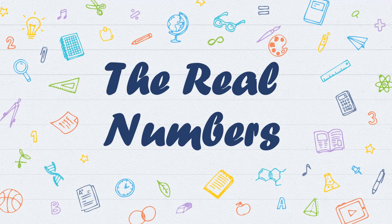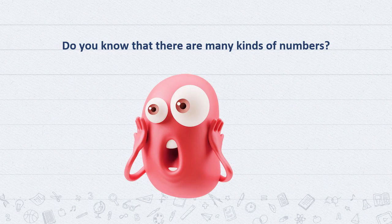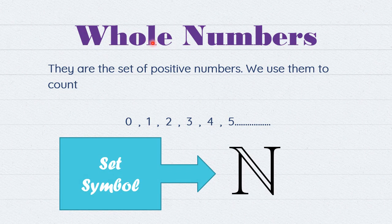Good morning dear students. This video is about the real numbers. Do you know that there are many kinds of numbers? Let's start with the whole numbers. They are the set of positive numbers which we use to count, such as 0, 1, 2, 3, 4, 5, etc. Their symbol is N.